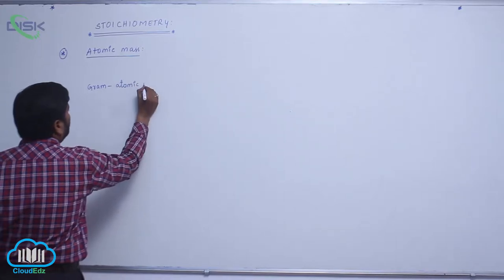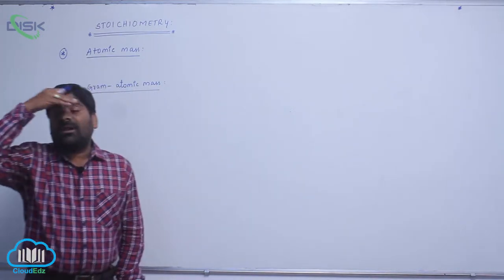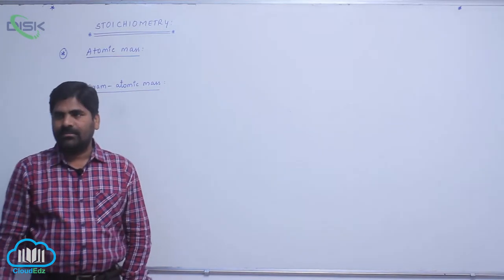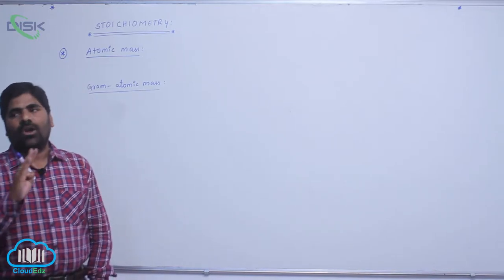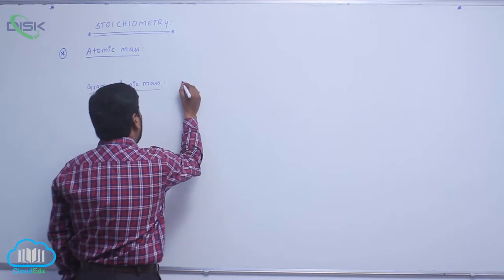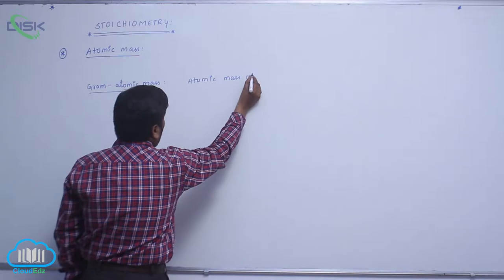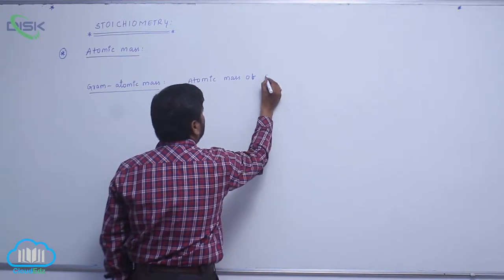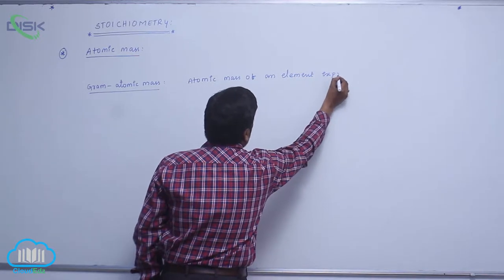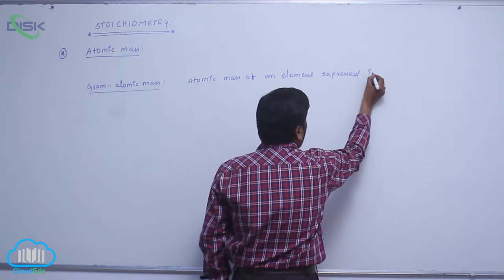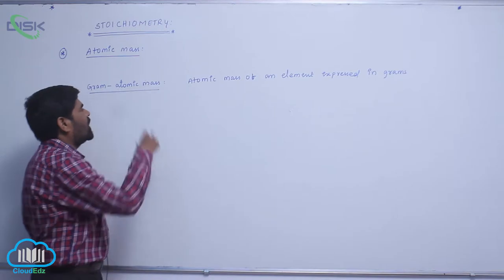Gram atomic mass. If atomic mass of an element is expressed in grams, it is known as gram atomic mass.